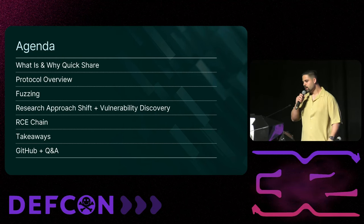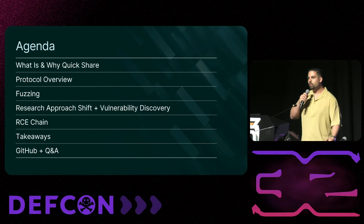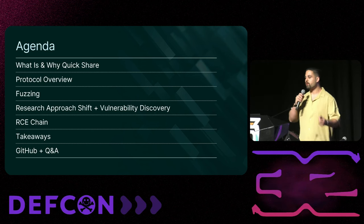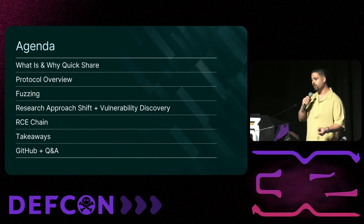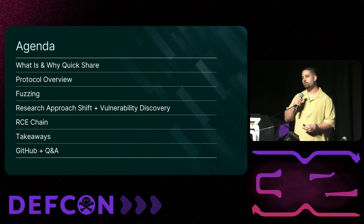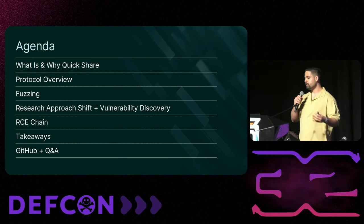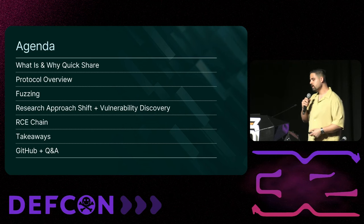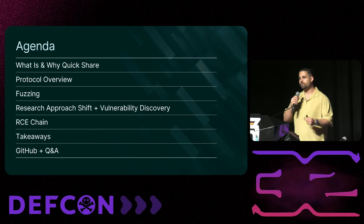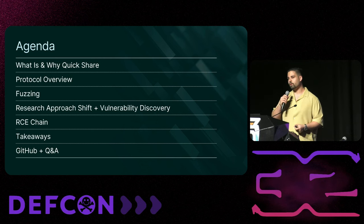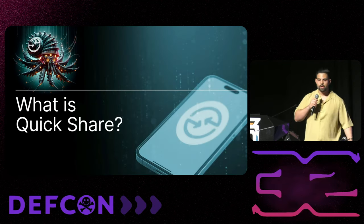Today we'll talk about QuickShare. We'll start with what QuickShare is and why we chose it as our primary target. We'll then get a brief overview of the protocol the feature uses, see our first research approach which is fuzzing, see our research approach shift that led us to other vulnerabilities, discuss the vulnerability discoveries, and see how we assembled a very unconventional and creative RCE attack chain. We'll conclude with takeaways and a link to the GitHub repository of all tools we created.